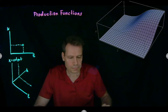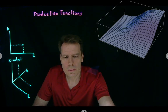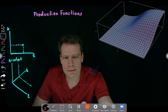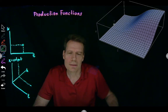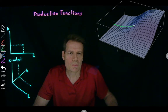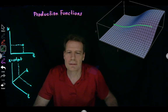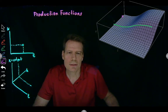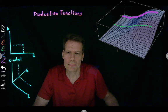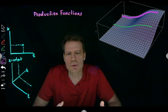We can trace out what those slices look like. Suppose we're at a given level of capital — the only remaining choice is how many workers to hire, so we go up the production function in that vertical slice. Or we could pick a higher level of capital — a bigger factory with more machines. In the short run that's fixed, so we're just hiring workers and going up that mountain, but we go up higher because we have more capital to start with. Those would be the shapes of the short-run production functions.